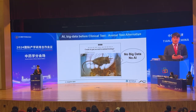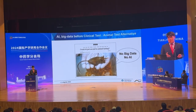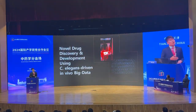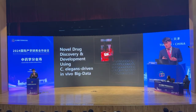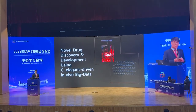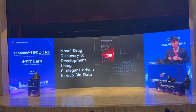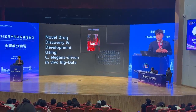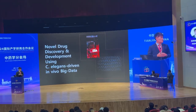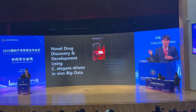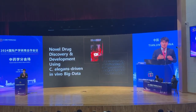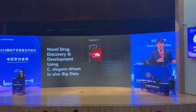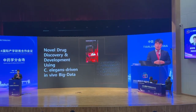So we have to produce in vivo big data from our preclinical or non-clinical tests. We employ C. elegans — a soil nematode — as an animal alternative model system. C. elegans is free from animal welfare issues. Many countries like the United States and European countries nowadays don't use higher animals like mouse and rabbit for non-clinical or preclinical tests.